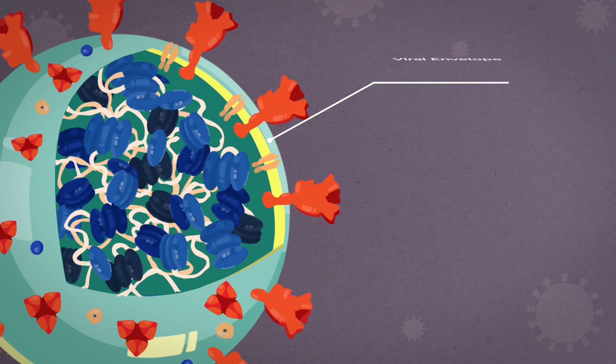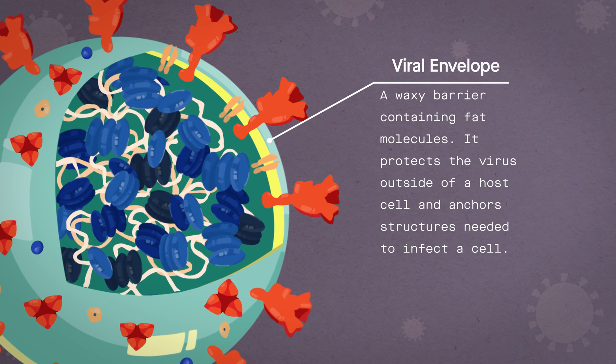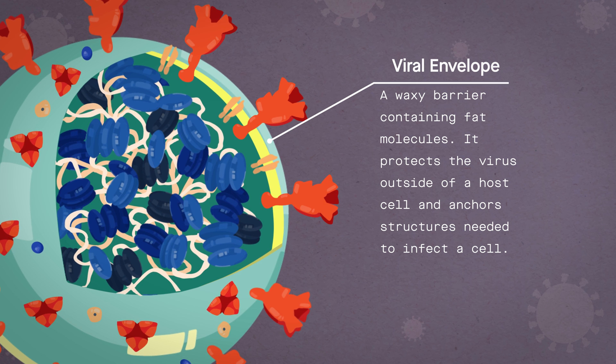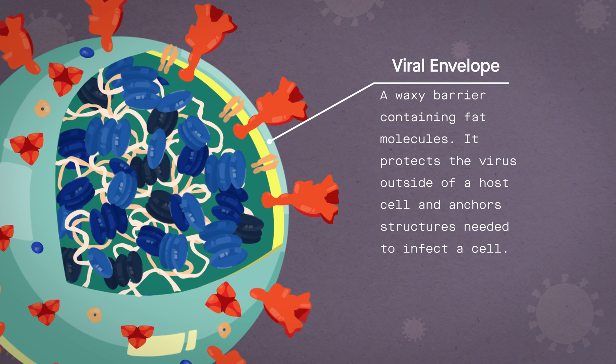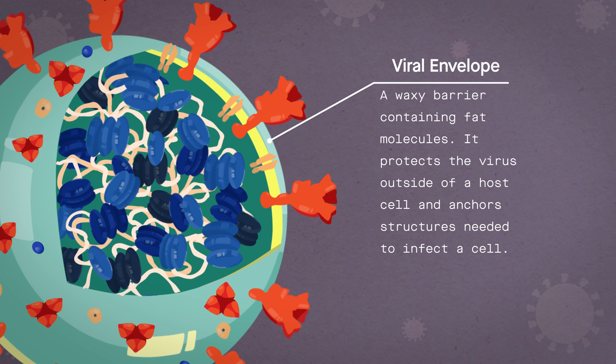Encapsulating the RNA genome is the viral envelope, which protects the virus when it is outside of a host cell. This outer envelope is made from a layer of lipids, a waxy barrier containing fat molecules, as well as protecting the precious genetic cargo.